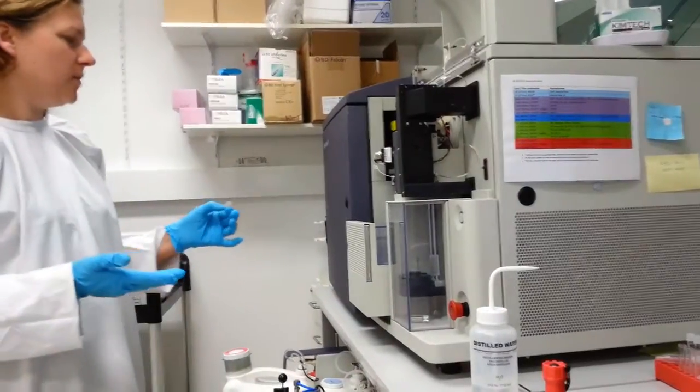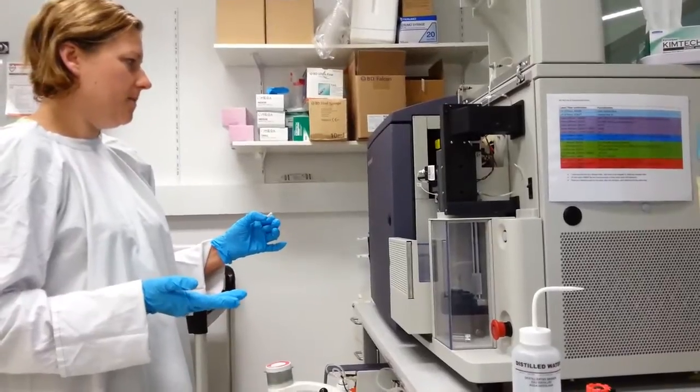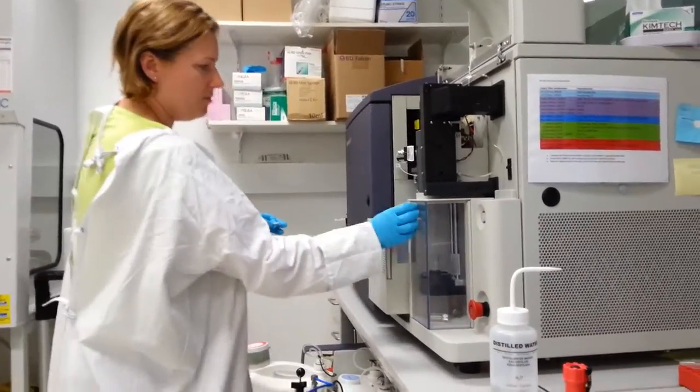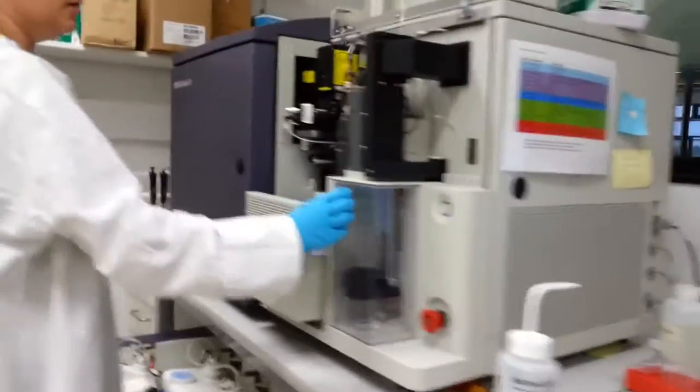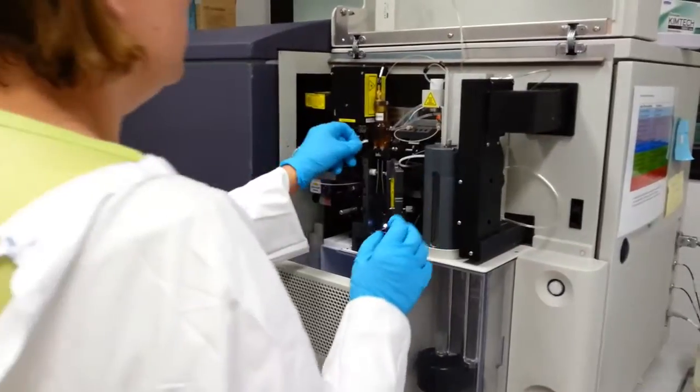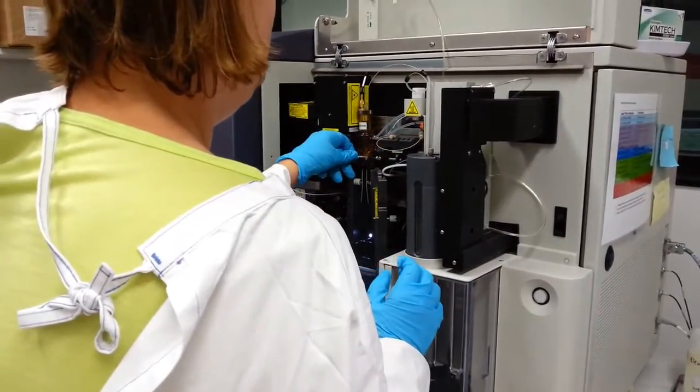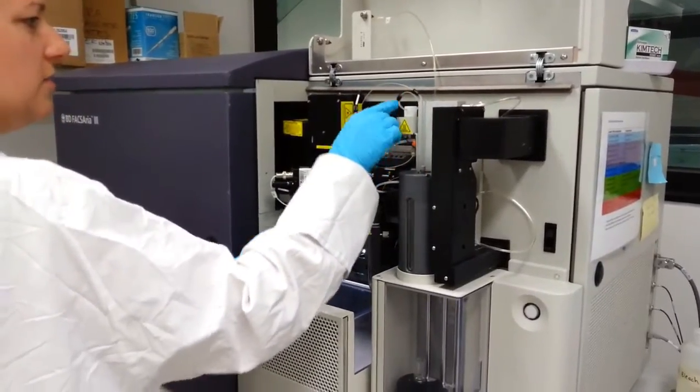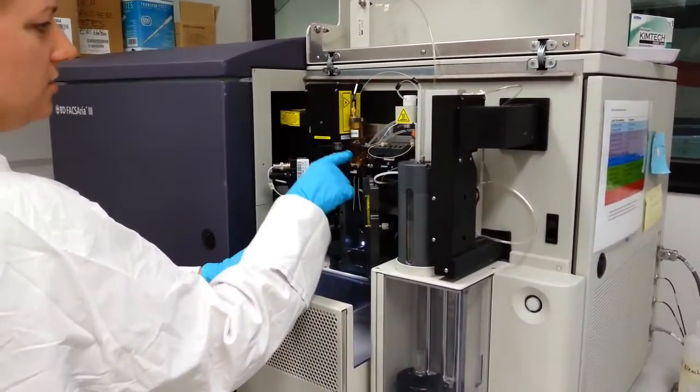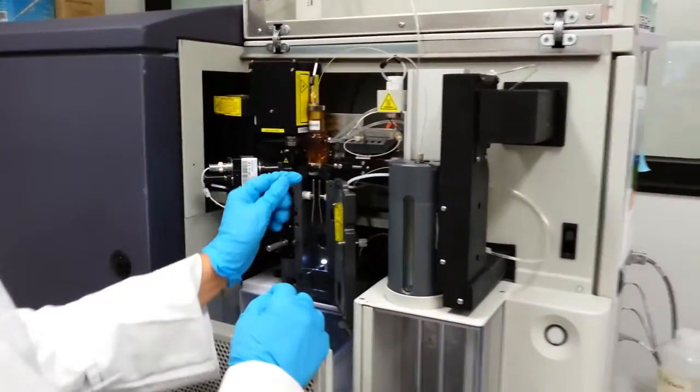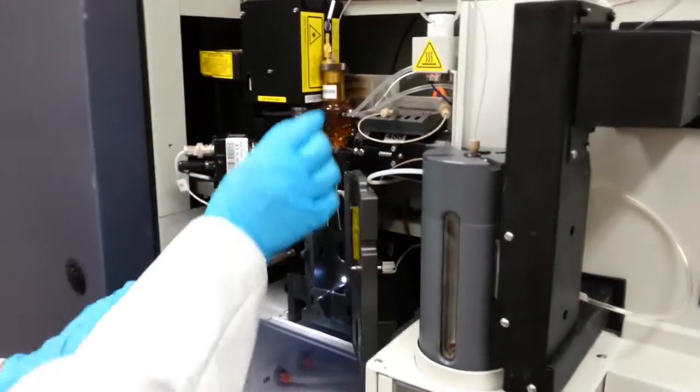This machine works by a sample of mixed cells coming up here into the sample chamber. This gets pressurized, and then when I hit run, the cells travel up these tiny tubes into this, what's called a flow cell. And in here, there's two chambers.